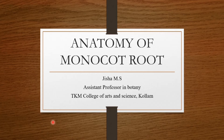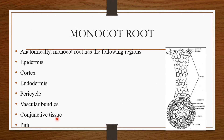Good morning. Today we will discuss the anatomy of monocot root, that is the primary structure of monocot root. In the last class we discussed the primary structure of dicot root. Anatomically, the monocot root has the following regions: epidermis, cortex, endodermis, pericycle, vascular bundles, conjunctive tissue, and pith.